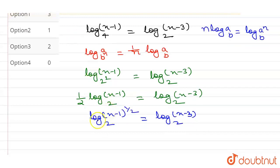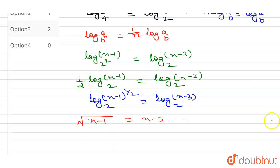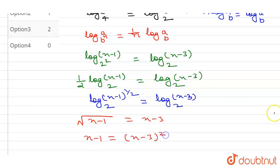Since both are logarithmic functions with the same base, the arguments must be equal. So we can write: the square root of (x minus 1) equals (x minus 3). Squaring both sides, the square root gets cancelled, leaving x minus 1 equals (x minus 3) whole squared.